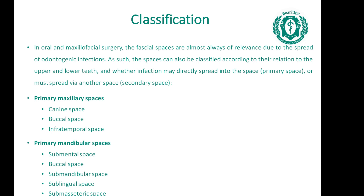In oral and maxillofacial surgery, the facial spaces are almost always of relevance due to the spread of odontogenic infections. The spaces can also be classified according to their relation to the upper and lower teeth, and whether infection may directly spread into the space — the primary space — or must spread via another space — the secondary space. Primary maxillary spaces are canine space, buccal space, and infratemporal space. Primary mandibular spaces are submental space, buccal space, submandibular space, sublingual space, and submasseteric space. Cervical spaces should also be described independently.